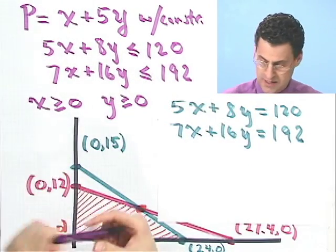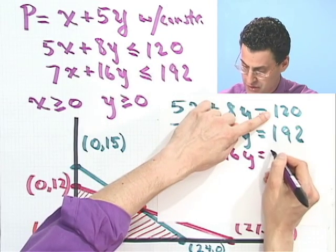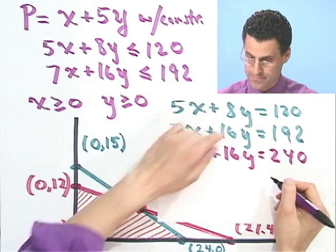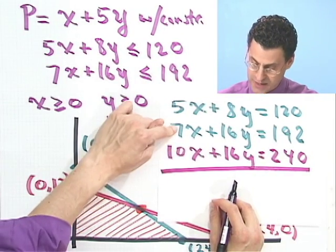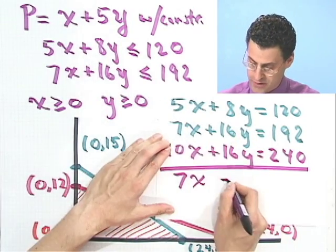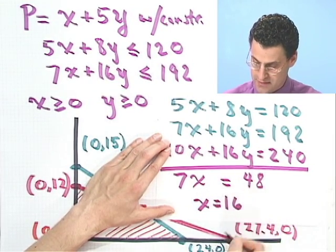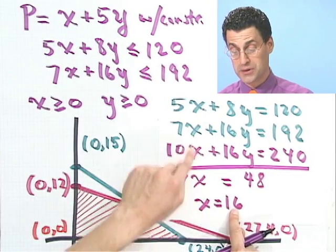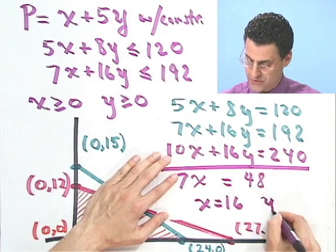And now if I subtract, let's take this and subtract that, I'd see 3x, and notice these drop out, so I'm using the elimination method, and this minus that equals 48. So that tells me that x would have to be 16. And I can now take that value for x, plug it back into one of these equations and solve for y, and I would see that y equals 5. I'll let you check that.